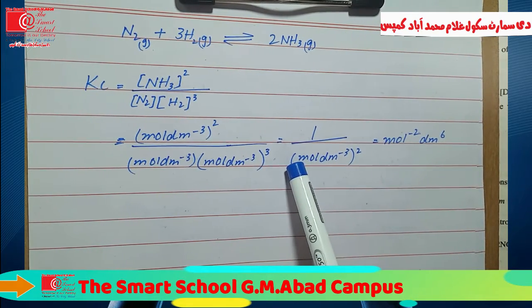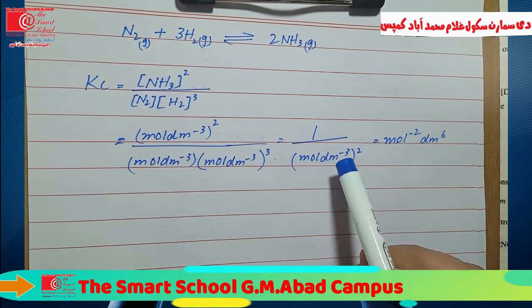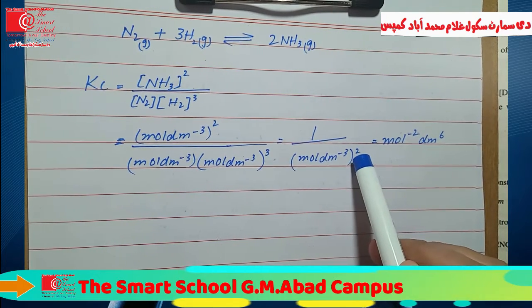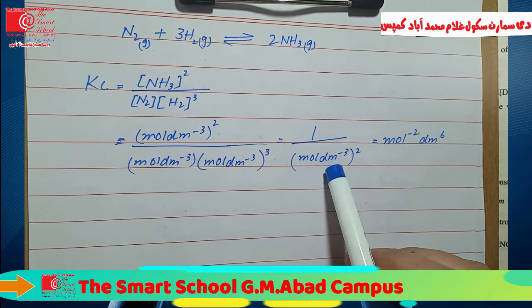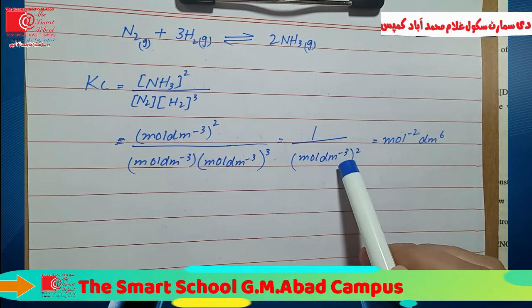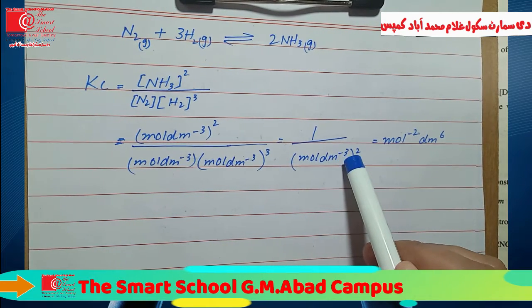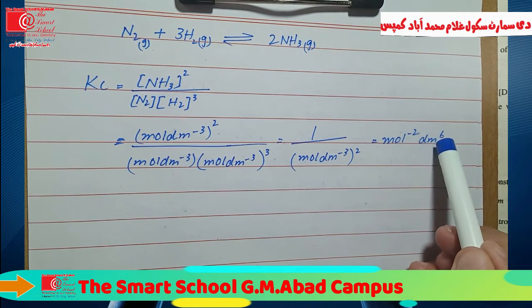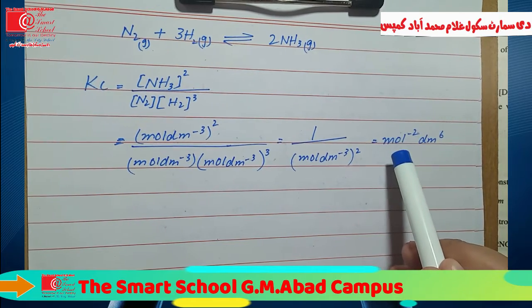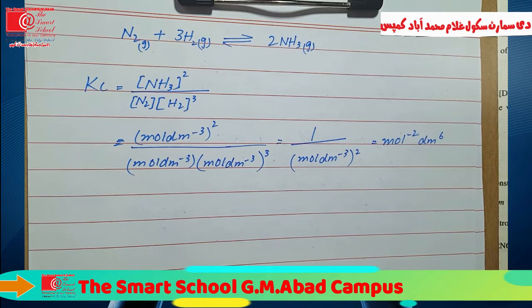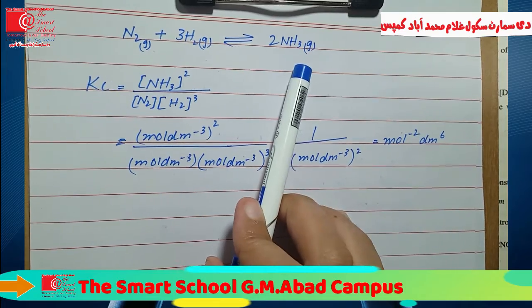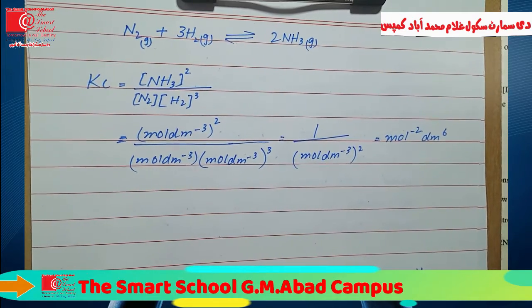When we move the remaining units from denominator to numerator, the sign of the power changes. We had mol/dm³ raised to the power of 2 in the denominator giving minus 2, and the 6 from dm³ becomes minus 6. The final unit of Kc for this reaction is mol⁻²·dm⁶. This means the unit of Kc changes depending on the reaction — it is not always unitless.